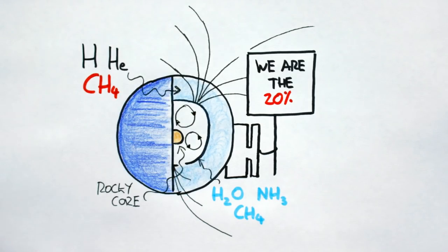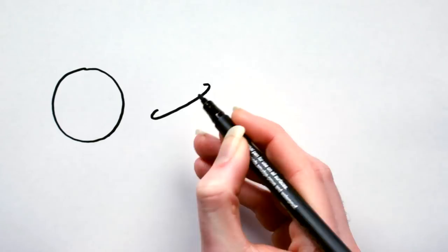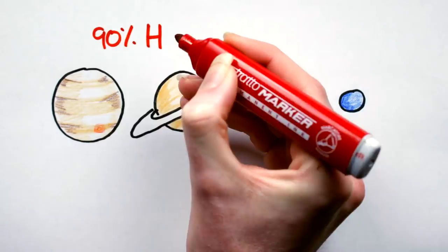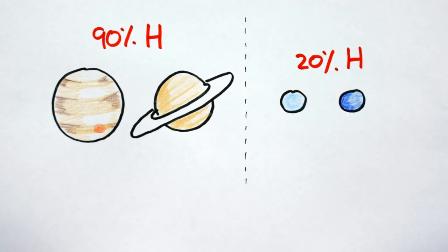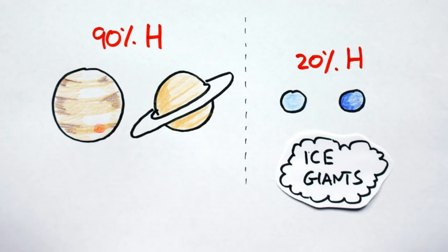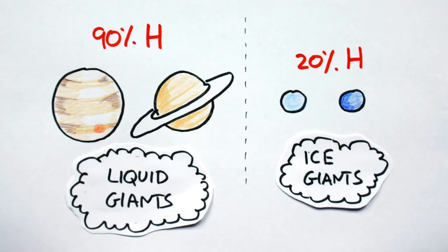Small traces of methane here give them their bluish tint. Uranus and Neptune differ from Jupiter and Saturn in size, colour and internal structure. So I'd argue that our system does not have 4 gas giants, rather 2 gas giants and 2 ice giants. Or more precisely, 2 ice giants and 2 liquid giants.